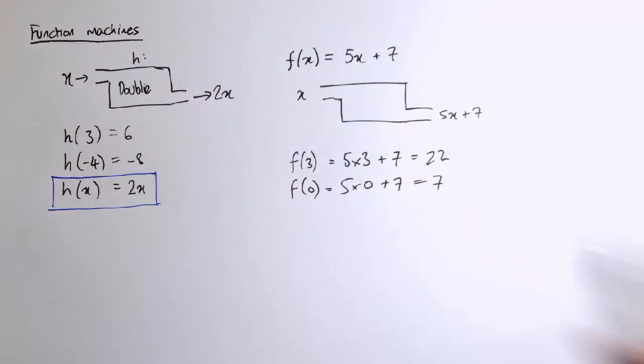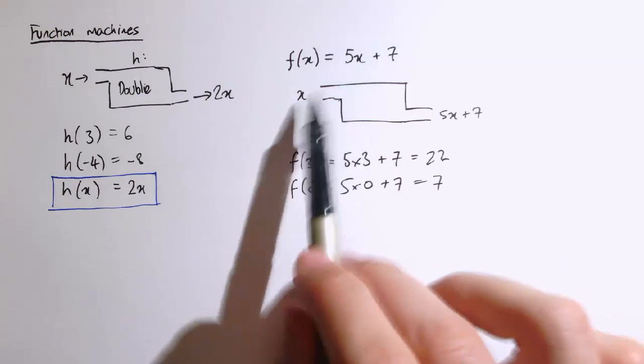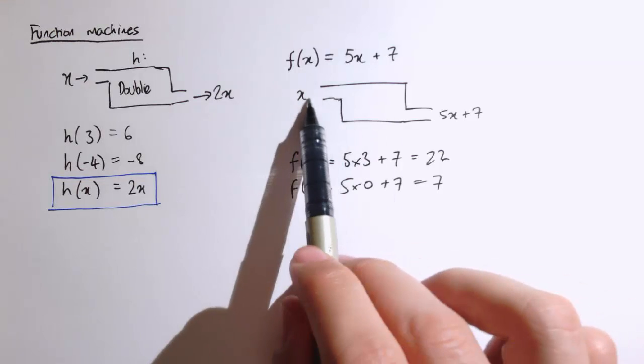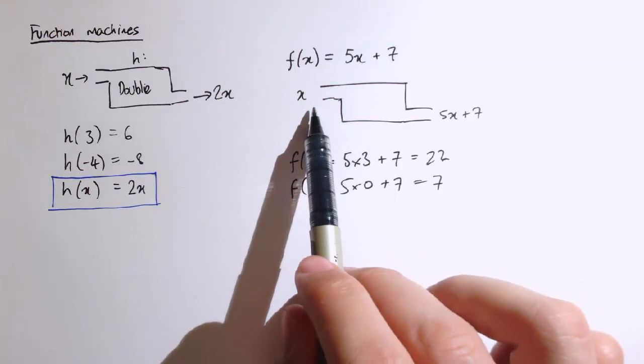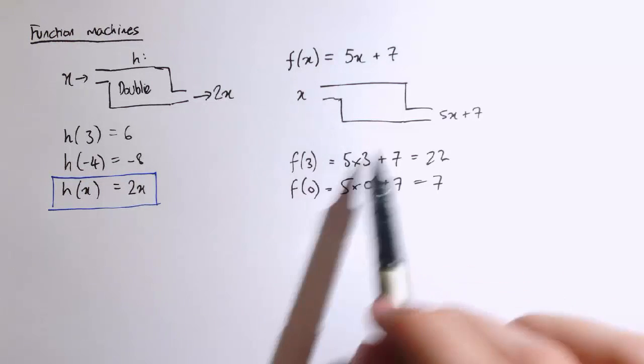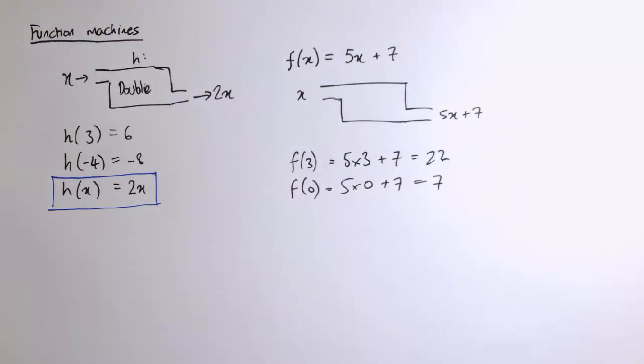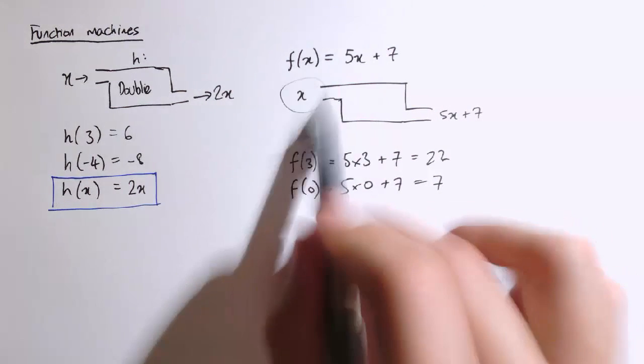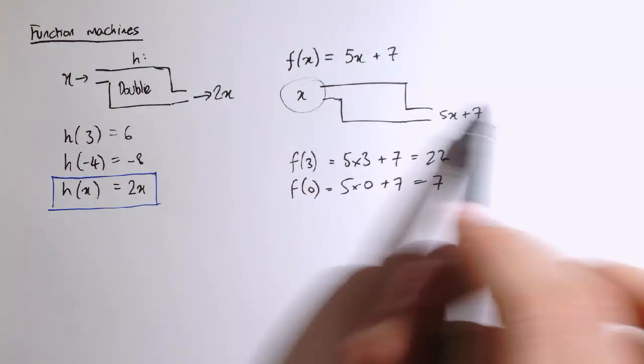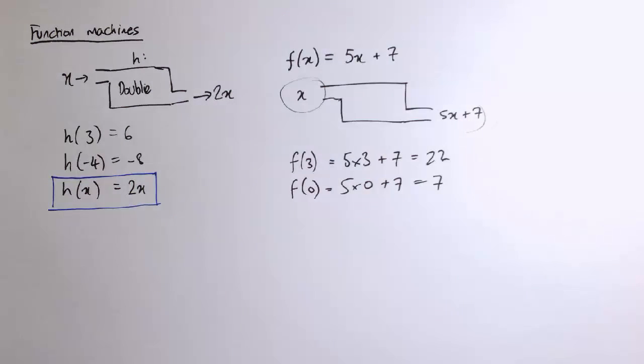And these sort of algebraic mechanisms can also help us to answer some problems to do with the function. So I could say, for example, for which value of x or which value can I put into the function, which makes the output the same as the input. So actually when is it that when I put a number into this machine, 5x plus 7, what comes out is exactly the same as the input.